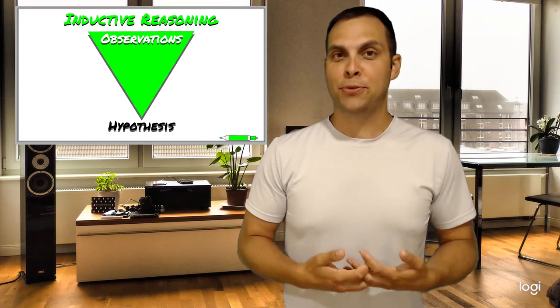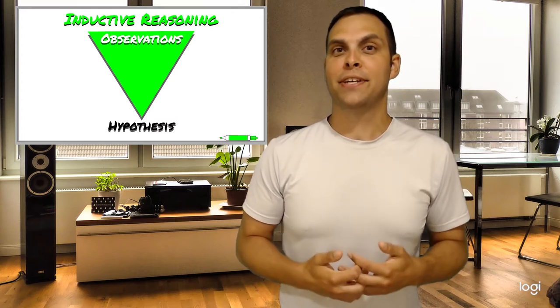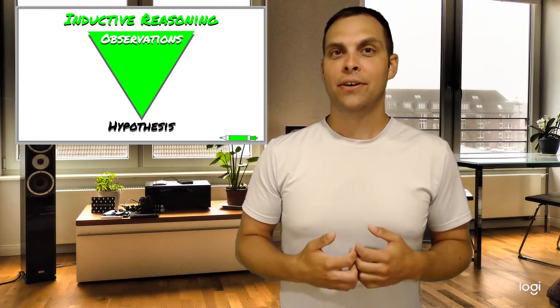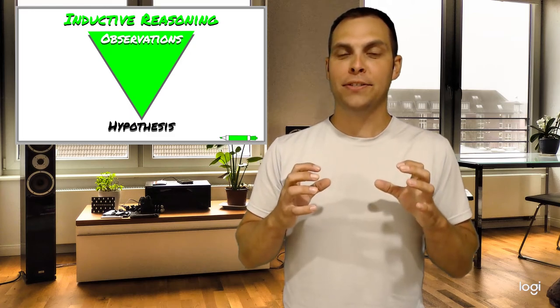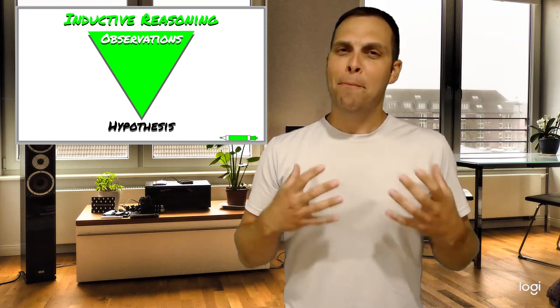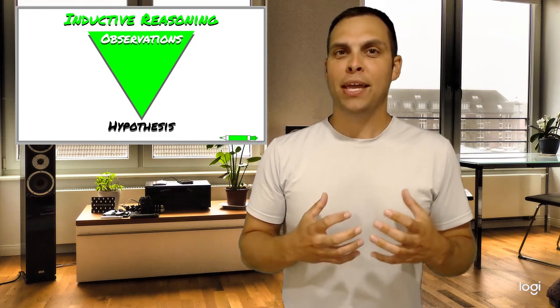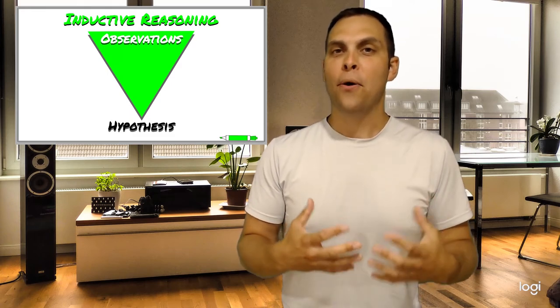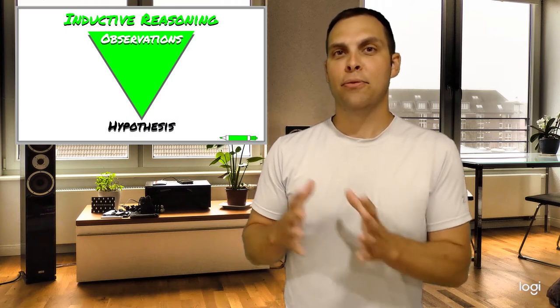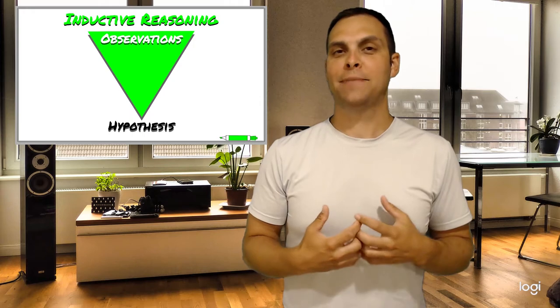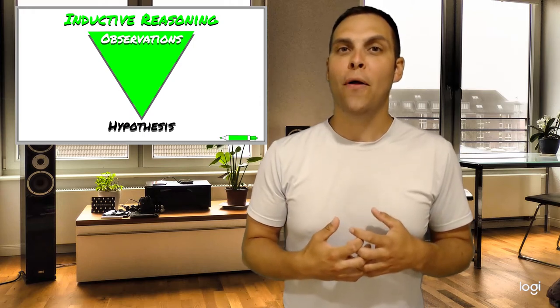The first type of reasoning is called inductive reasoning. And the easiest way to remember the difference between inductive and deductive reasoning is that inductive reasoning relies on taking information in. We make lots of observations and we collect those observations, put them together and say, based on these observations, I think the reason why this event or phenomenon occurs is through this. And that potential explanation is what we call a hypothesis.